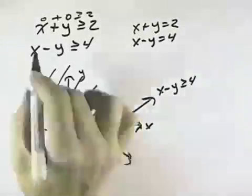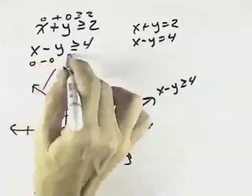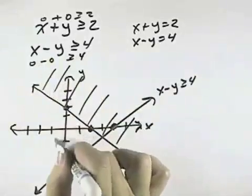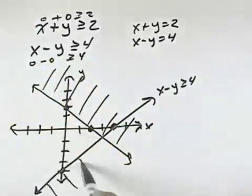And again, using a test point such as 0, 0, I could have 0 minus 0 is greater than or equal to 4. That's again not true, so don't shade that side of the line. That says shade the other side.